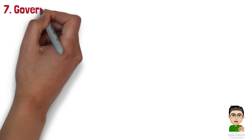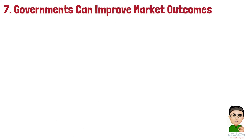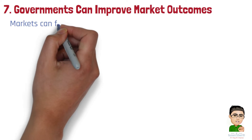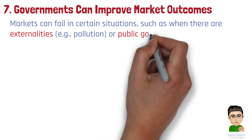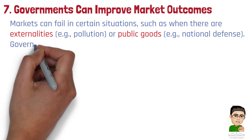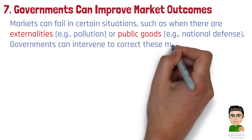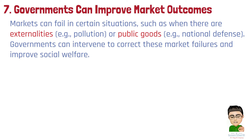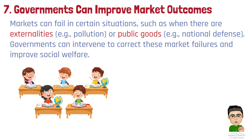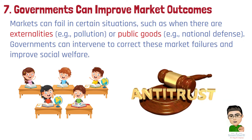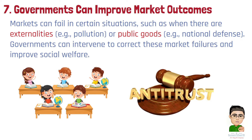Number 7: Governments can sometimes improve market outcomes. While markets are efficient, they can fail in certain situations, such as when there are externalities like pollution, or public goods like national defense. Governments can intervene to correct these market failures and improve social welfare. Example 1: The establishment of public schools provides education to all children, regardless of their parents' income, aiming to equalize opportunities. Example 2: Implementing antitrust laws prevents monopolies from forming, promoting competition and protecting consumer interests.